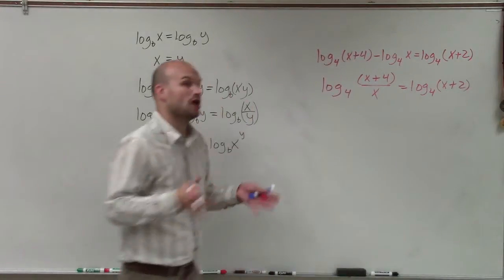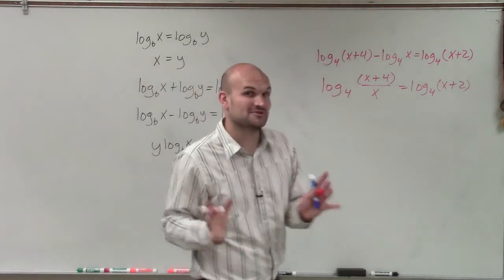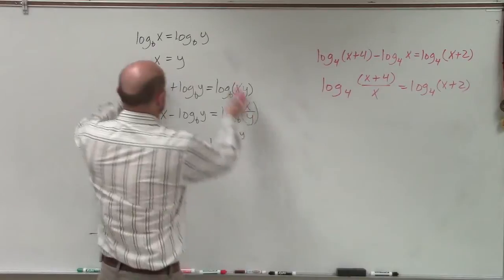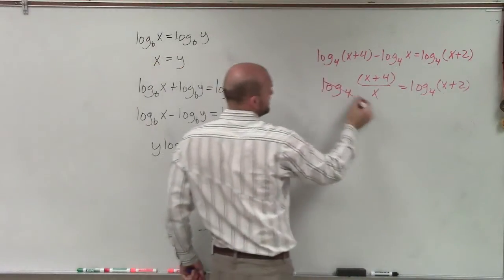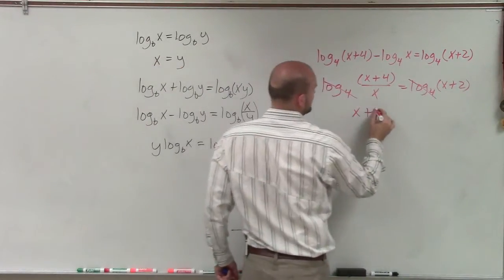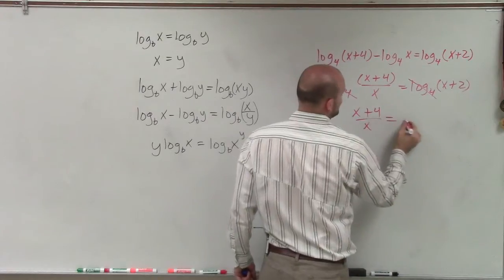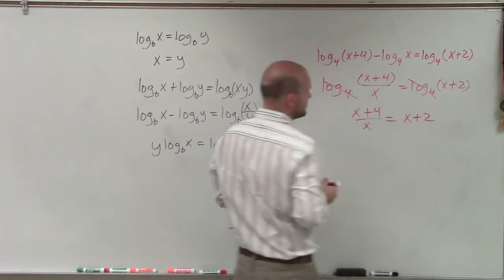Now, since I have a single logarithm equal to another single logarithm, I know that I can apply the one-to-one property and state that (x plus 4) over x has to equal (x plus 2).